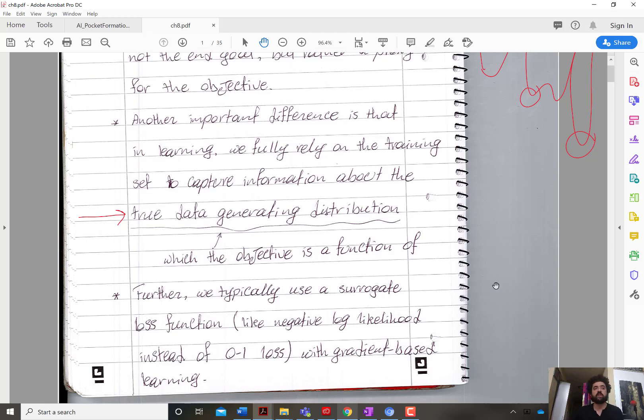We cannot measure test loss during training. Not only that, but because I need to optimize that cost function over the empirical data, we need a mechanism for optimization. And the mechanism that's used in deep learning is gradient based learning.